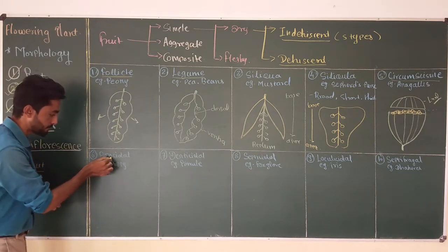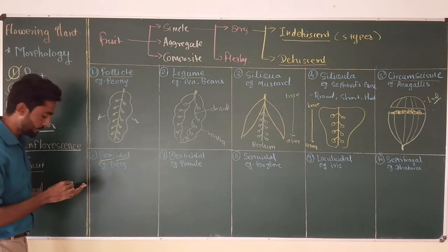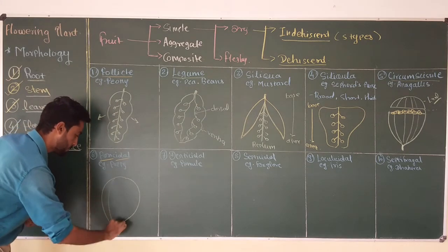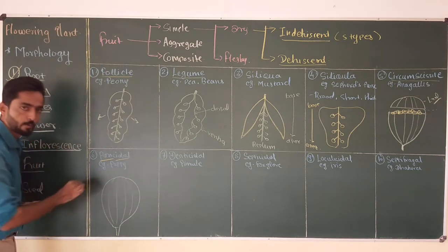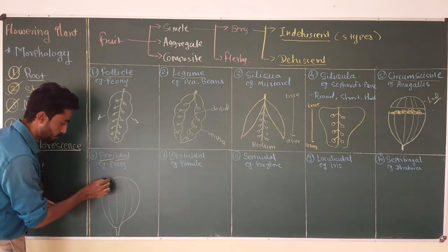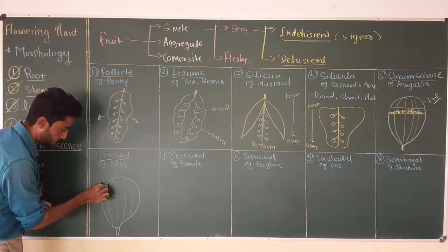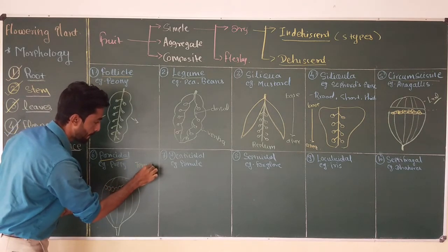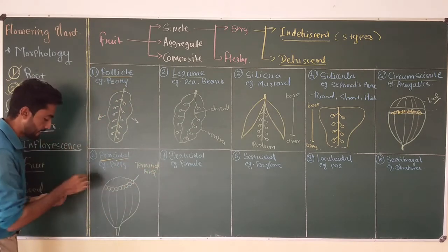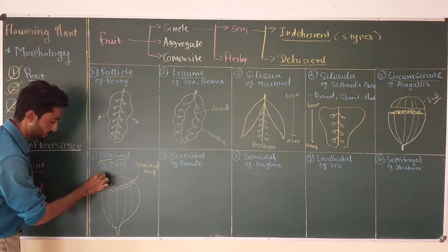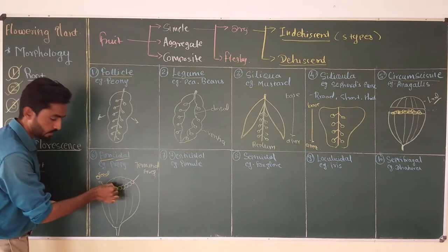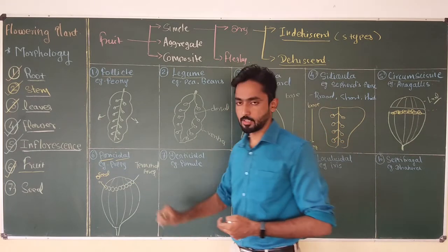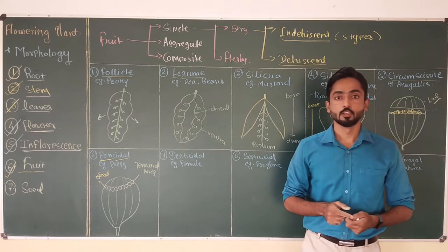The next type is poricidal. The name itself suggests 'pori' means hole or pore and 'cidal' means bearing. In this type, the fruit — made from polycarpellary ovary with multiple compartments — develops pores or holes at the terminal section, called terminal pores. Seeds are released from these terminal pores. Example is poppy.